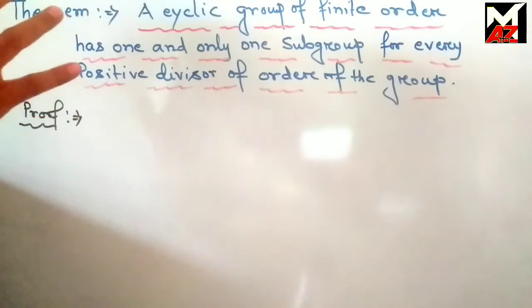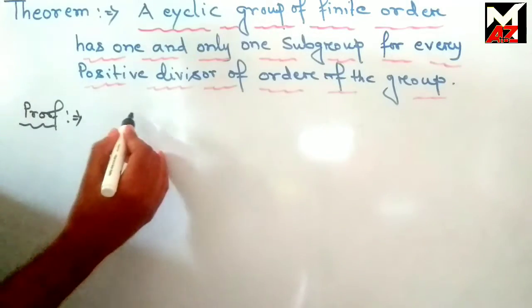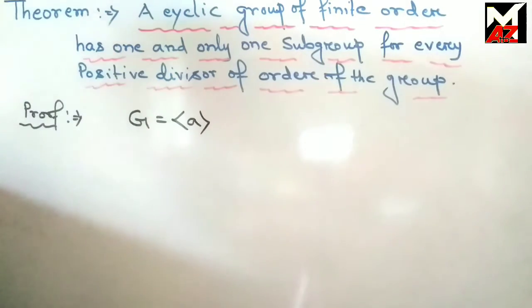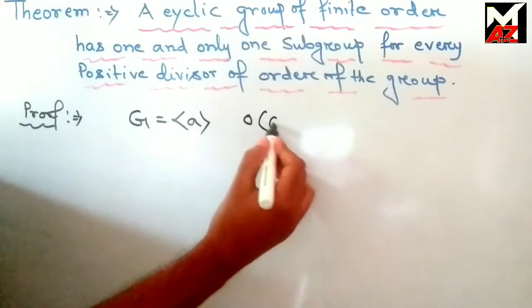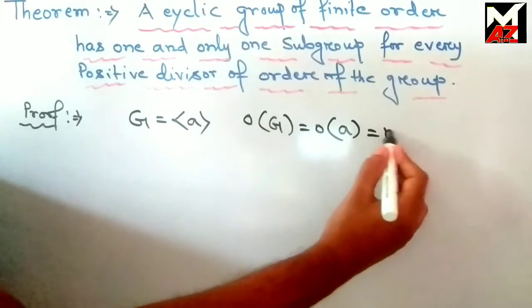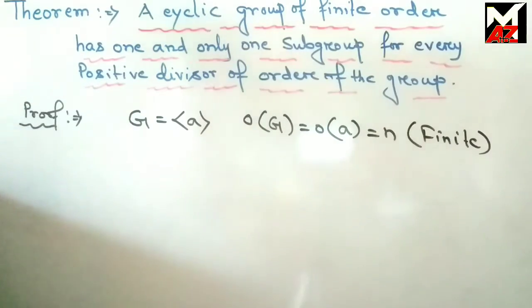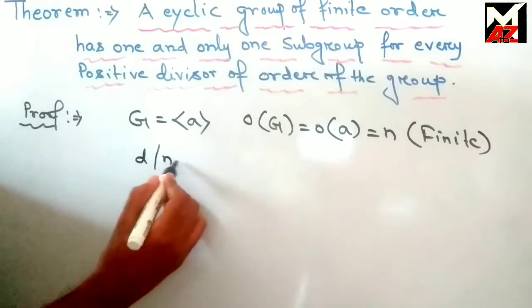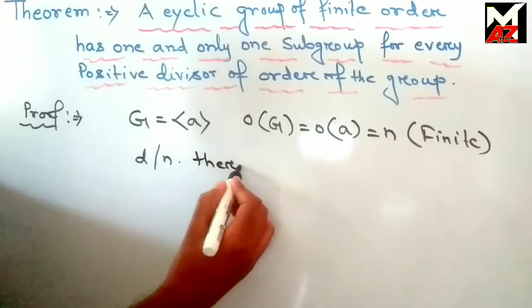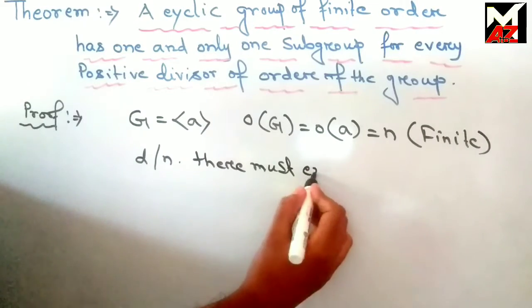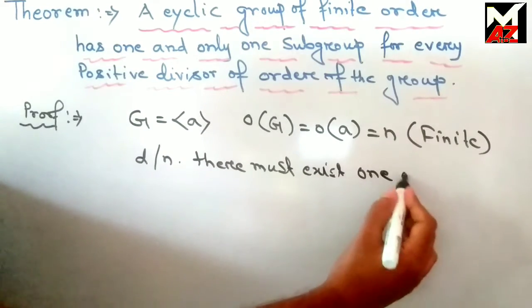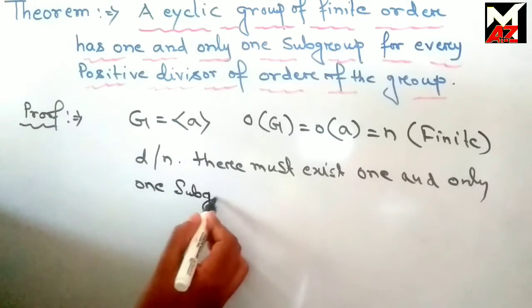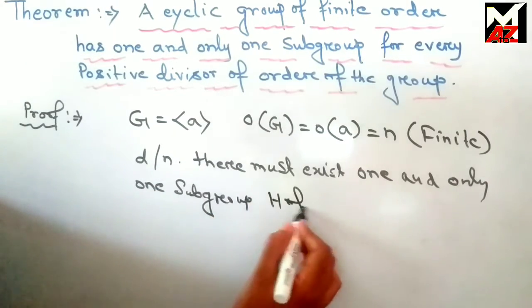So the statement is: if G is a group and if it is cyclic generated by A, and if order of G is equal to order of A is equal to N (this is finite), then for every positive divisor D of N there must exist one and only one subgroup H of G.